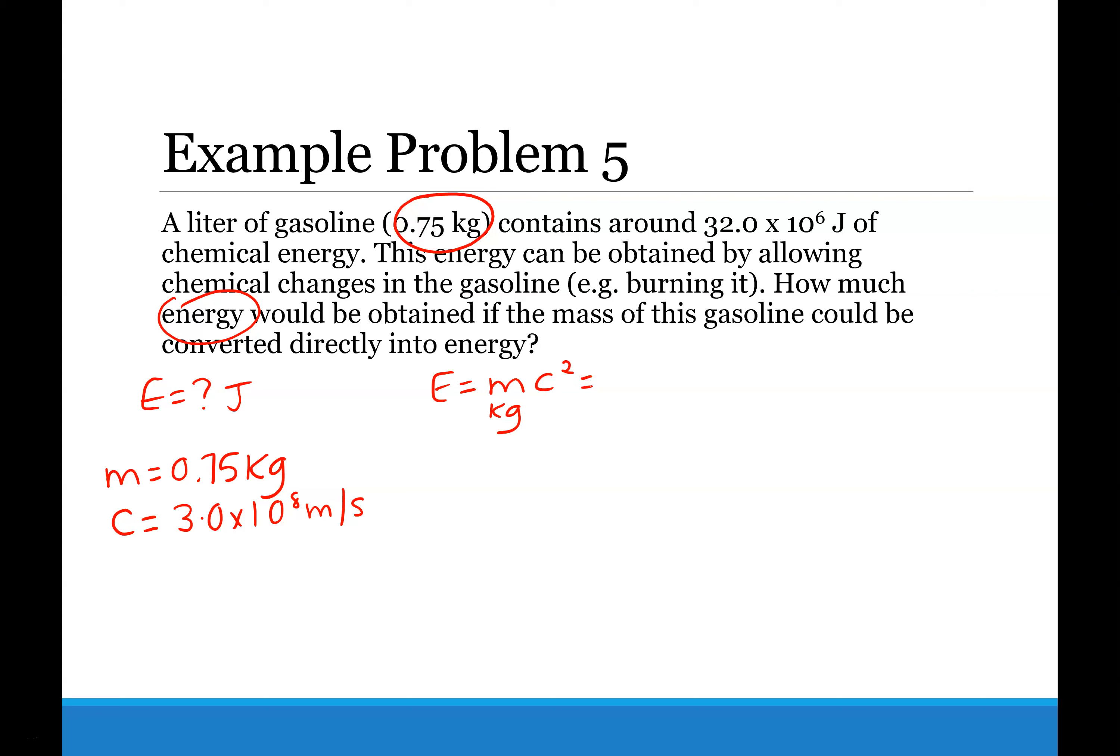So we're going to go ahead and plug in our variables. M is 0.75 kilograms, and C is 3.0 times 10 to the 8 meters per second squared. Don't forget to square the speed of light.